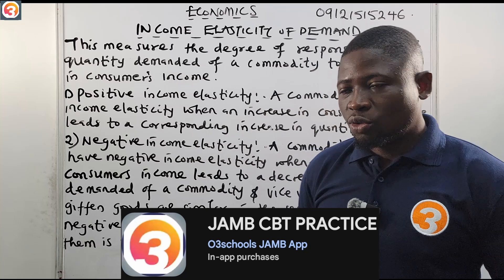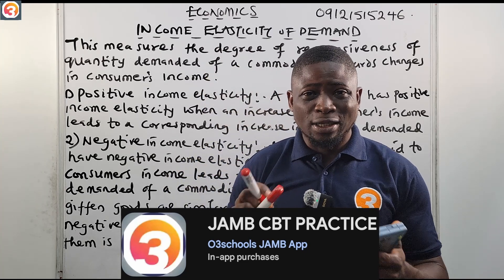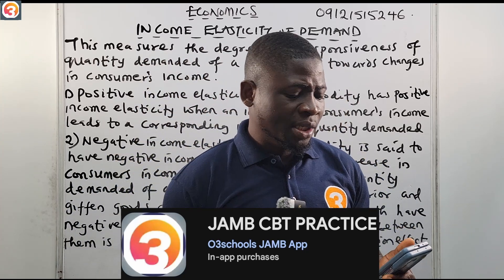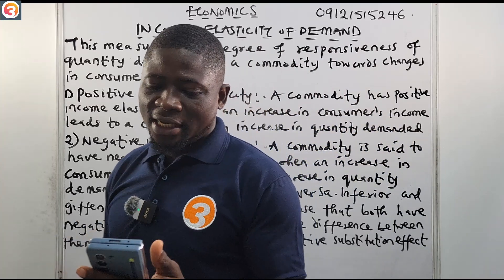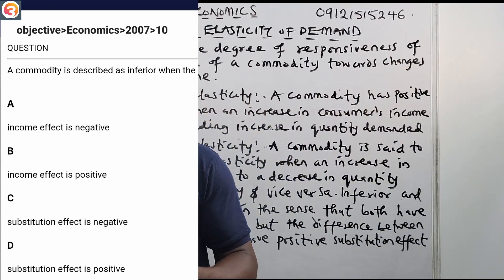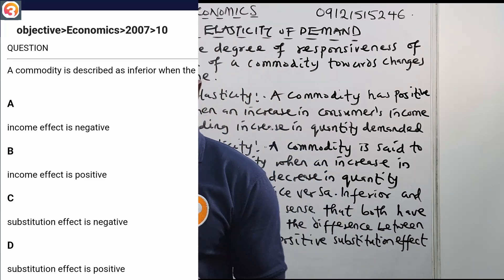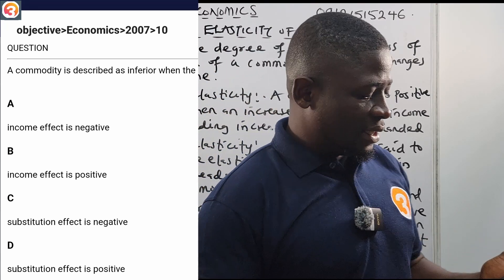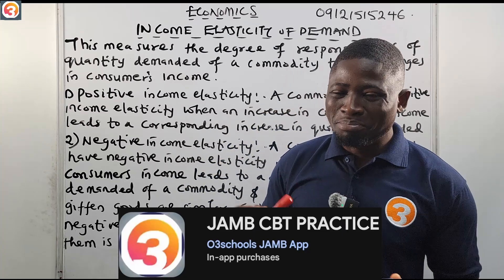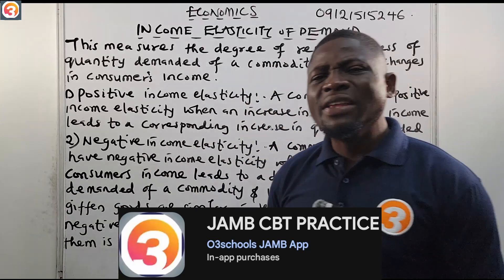This tutorial is brought to you by the All3Schools JAMB CBT practice application — all you need to succeed in your exam. Now, before I talk about the features of the app, let us see a question from the application. This is a 2007 JAMB past question number 10: a commodity is described as inferior when — A: income effect is negative, B: income effect is positive, C: substitution effect is negative, D: substitution effect is positive. We will answer this question at the end of the class.